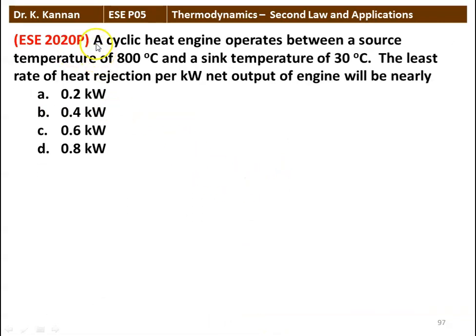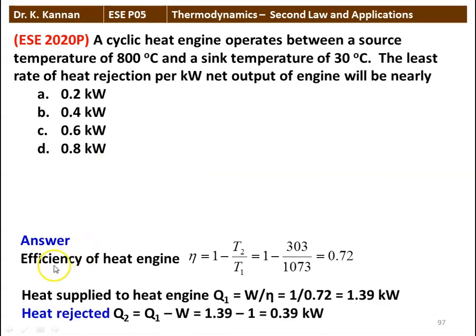Next question: a cyclic heat engine operates between a source temperature of 800°C and a sink temperature of 30°C. The least heat of rejection per kilowatt net work output will be nearly 0.2, 0.4, 0.6, or 0.8 kilowatts. Answer: efficiency η = 1 − T2/T1 = 1 − 303/1073 = 0.72. Heat supplied Q1 = W/η = 1/0.72 = 1.39 kW. Heat rejected Q2 = Q1 − W = 1.39 − 1 = 0.39 kW. The answer is 0.4 kilowatts.